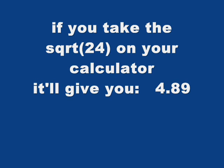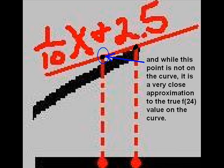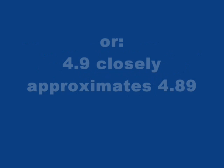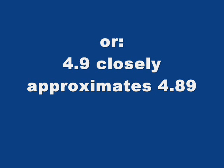If you take the square root of 24 on your calculator, it'll give you 4.89. And while this point is not on the curve, the one that we just got, it is a very close approximation to the true f of 24 value that is on the curve. Which is to say that 4.9 comes pretty close to 4.89, or 4.9 closely approximates 4.89.